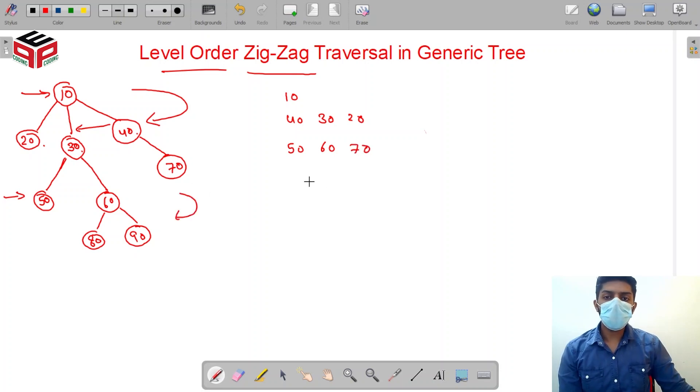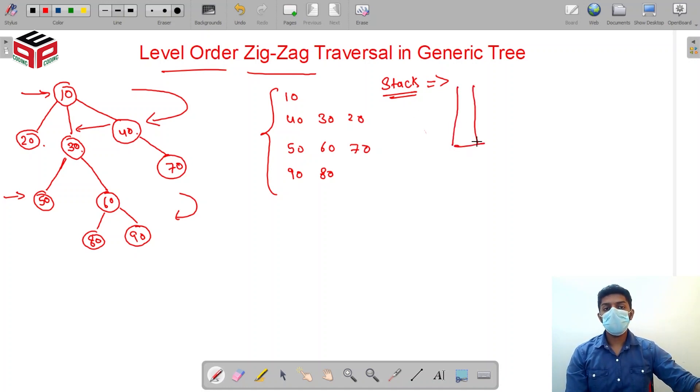In order to achieve this output, the data structure we'll be using, unlike in the previous question, is stacks. So we'll be using two stacks. And why exactly are we using stacks? It's because stacks have the capability to reverse the output. If the input order was actually one, two, three, the output fashion I will be getting will be three, then two, and one.